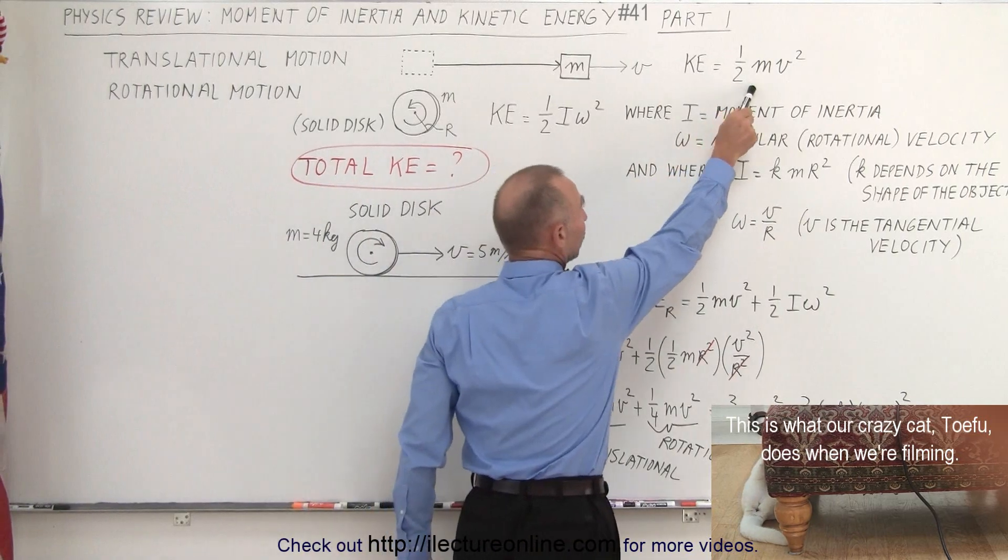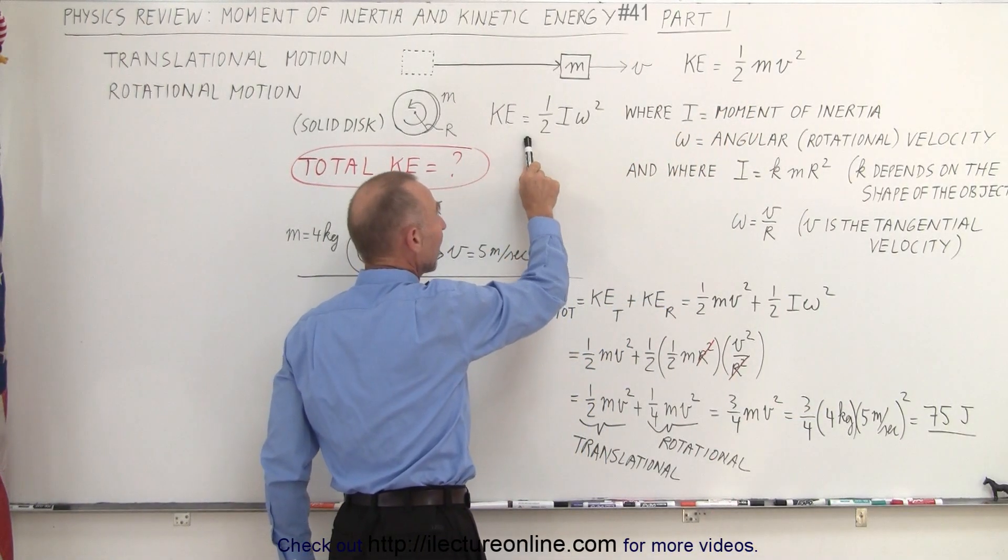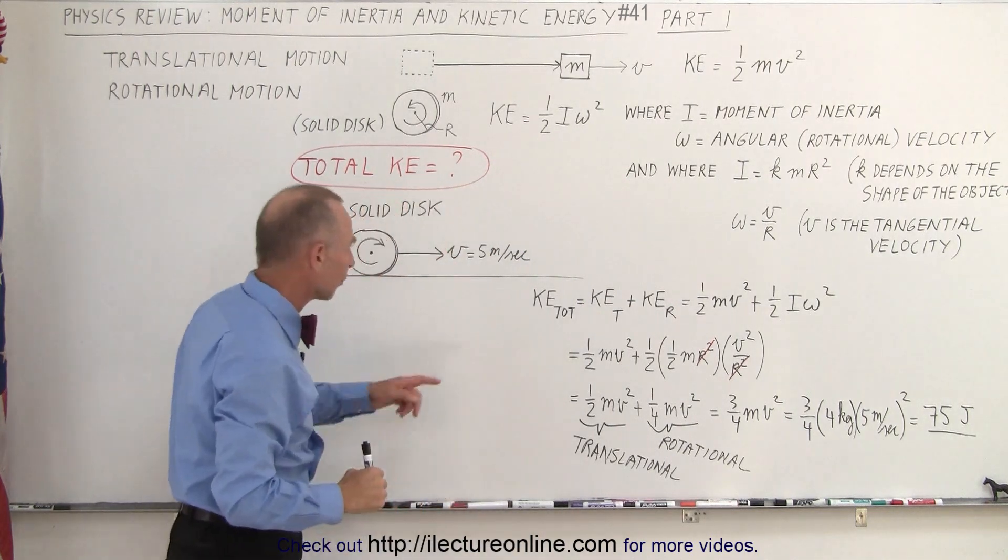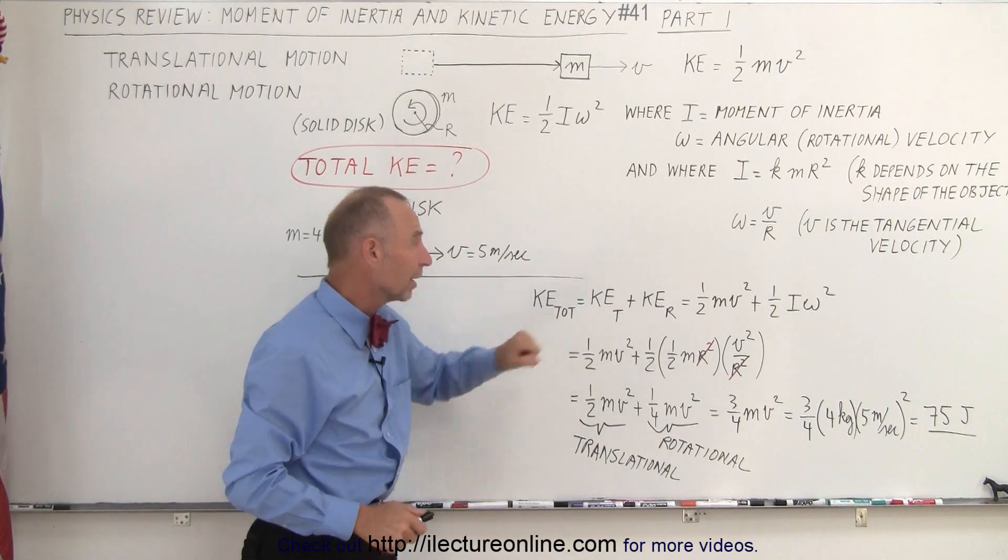So we have translational kinetic energy, one-half mv squared, rotational kinetic energy, one-half I omega squared, and then of course if you want to find the total kinetic energy, you add those together.